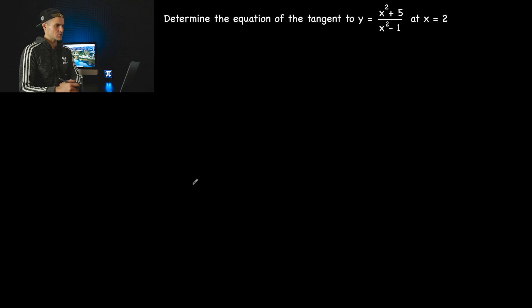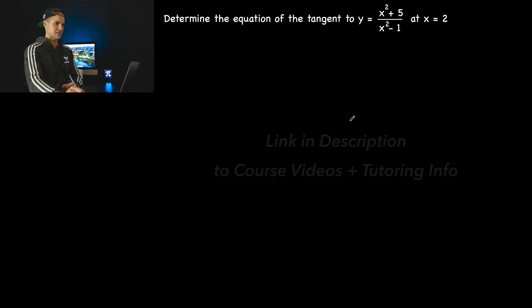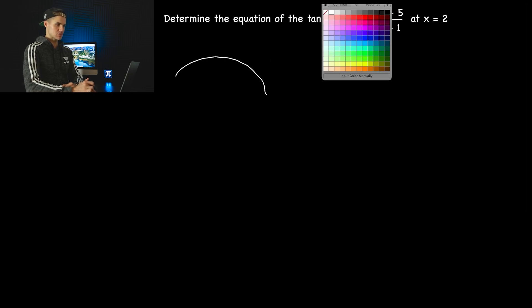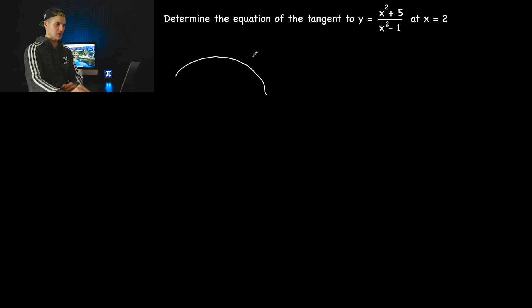I'm moving on to the next test question, the next application question. We have to determine the equation of the tangent on this function, y equals x squared plus 5 over x squared minus 1 at this x value of 2. So let's pretend that the function maybe looks like this. I know that it doesn't, but just to give you a visual of what's happening here, at this x value of 2, we're going to be finding the equation of this tangent like that.